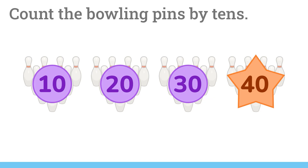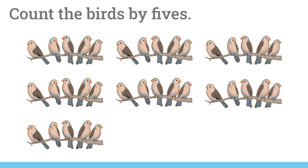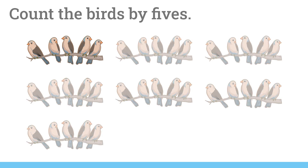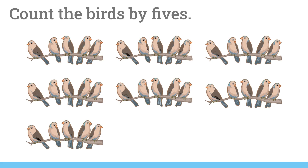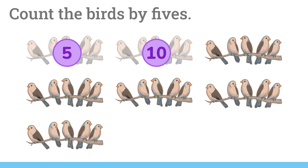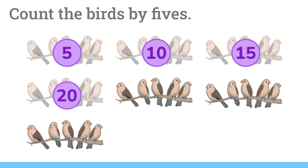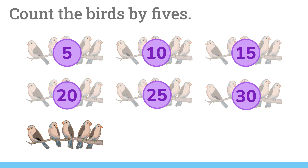One more. Count the birds by fives. Here, there are five birds on each branch. Let's skip count by fives. 5, 10, 15, 20, 25, 30, 35. There are 35 birds in all.